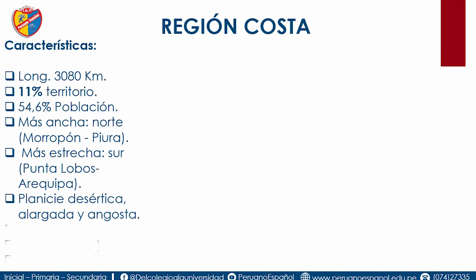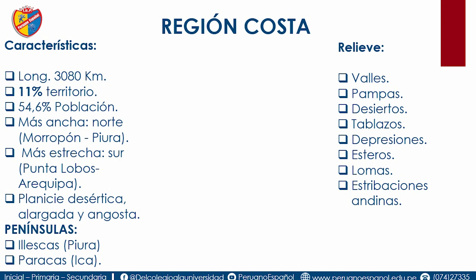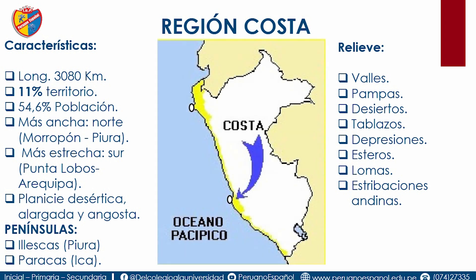Vamos a la región costa. Su longitud es 3,080 kilómetros, desde Tumbes hasta Tacna. Representa el 11% del territorio, menos que la sierra y la selva, pero se concentra la gran cantidad de población: el 54.6%. El departamento más poblado es Lima. La más ancha está en Piura, en Morropón, y la más angosta está en Arequipa, en Punta Lobos. Toda esta zona es plana y desértica, lo cual se debe a la presencia de la corriente peruana.